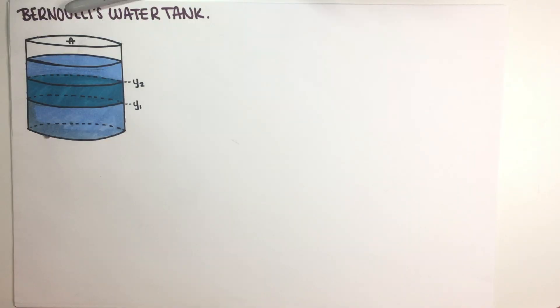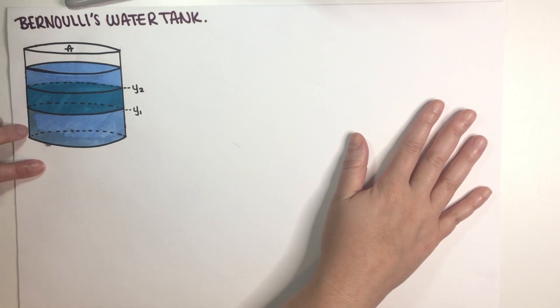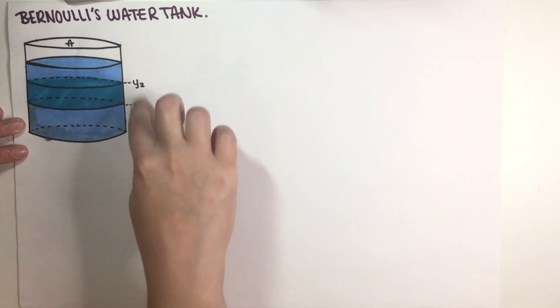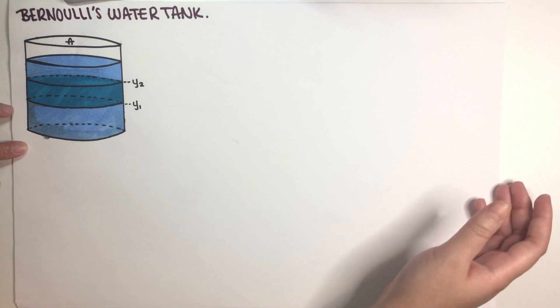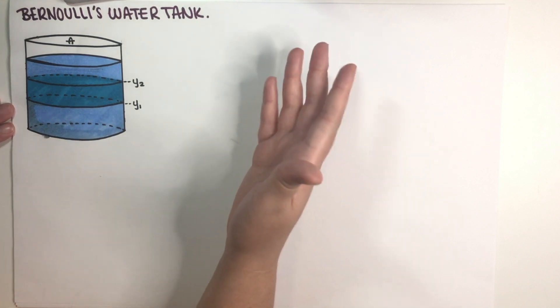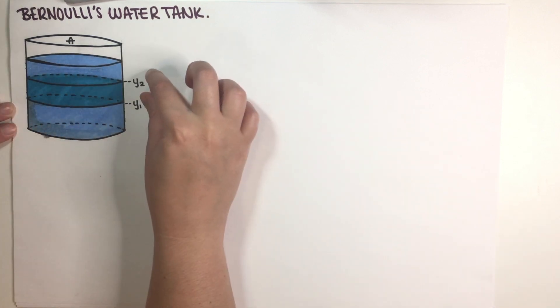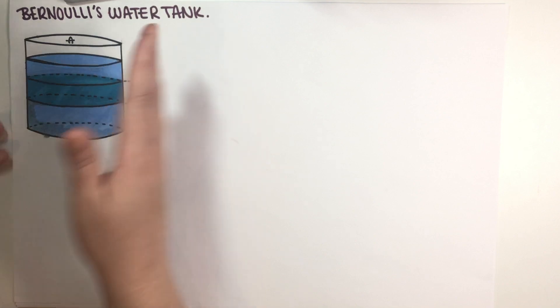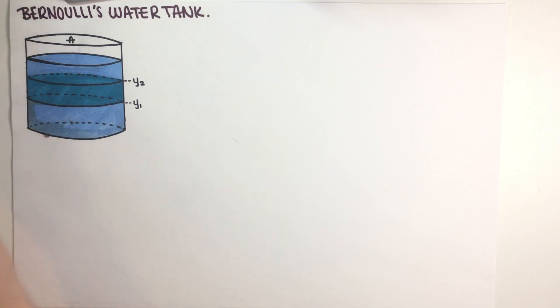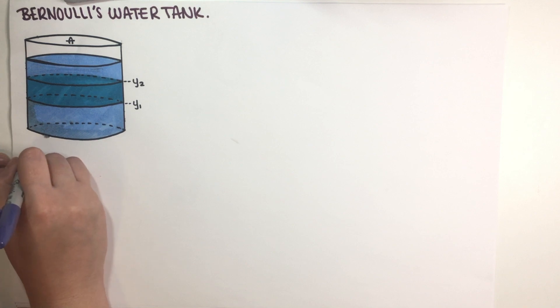So feel free to pause the video in order to copy the instructions. I'm just going to go ahead and just follow them to see where we end up. Hopefully we'll get to the Bernoulli equation. So the first thing is that we should, as you can see I have everything over here in my notes. I have the water tank and I have the highlighted zone.